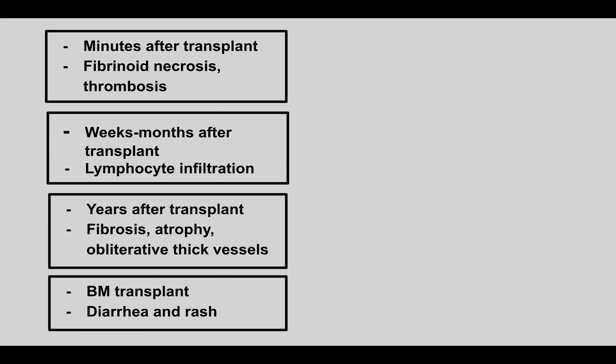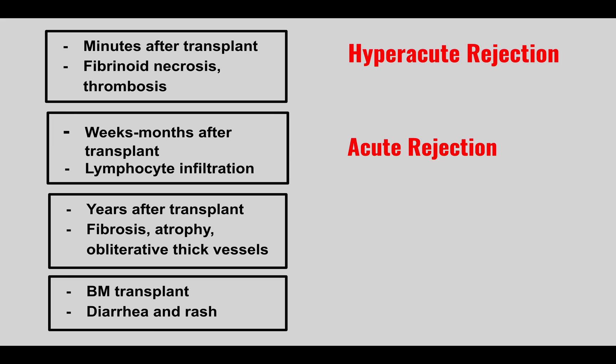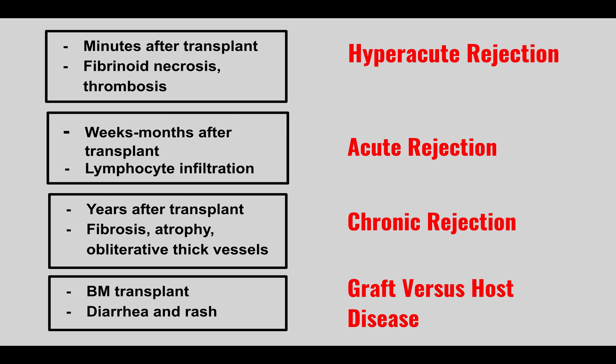The next section covers transplant reactions. Minutes after a transplant with fibrinoid necrosis and thrombosis is hyperacute rejection. Weeks to months (usually less than three months) after transplant with leukocyte infiltration is acute rejection. Years after transplant with fibrosis, atrophy, or obliterative thick vessels is chronic rejection. Finally, a bone marrow transplant recipient presenting with diarrhea and a rash has graft-versus-host disease, where donor CD8 lymphocytes attack the host.